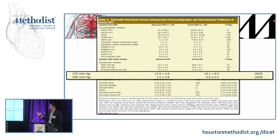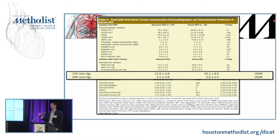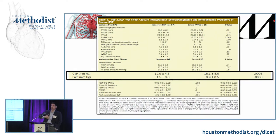One caveat to this study is that they used the Intermax definition for RV failure, which includes CVP as part of what they used to define RV failure. So if you're using it to define it, it'll probably associate with it.